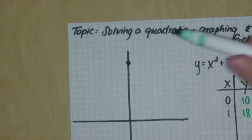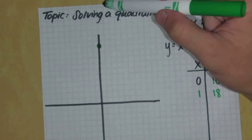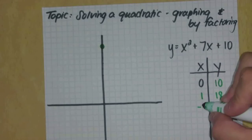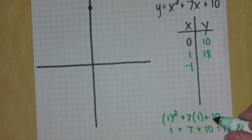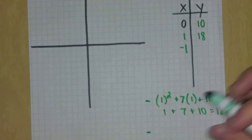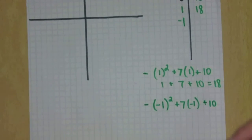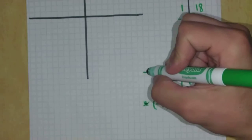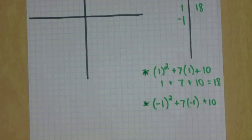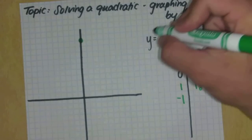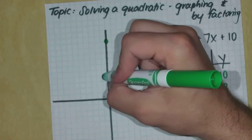Zero-ten is all the way up there, and eighteen would run off my page, so I'm going to switch to some negative values. If I plug in negative one, I'll show the math because it can get a little tricky. Using parentheses: negative one squared is positive one, seven times negative one is negative seven, plus ten — that all equals positive four. So when X is negative one, Y is positive four, giving me the point (-1, 4).